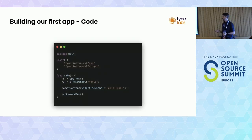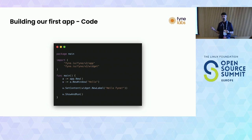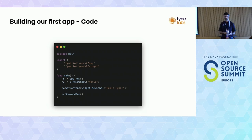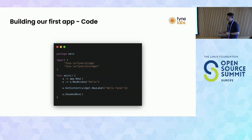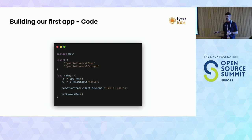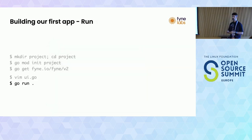This should be pretty straightforward to follow. We have our package, it's called main - that's your entry point for any Go program. We're importing the app and widget sub-packages from the Fyne project. The main function is all we need: we start a new application assigned to variable A, open a new window called hello, set the content with a new label widget saying hello Fyne, then call show and run on the window. We can run this with go run and the project name.